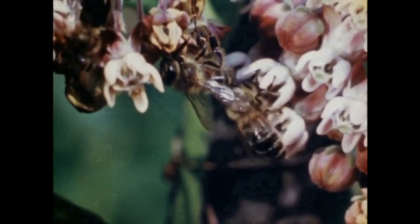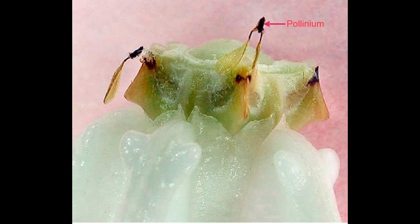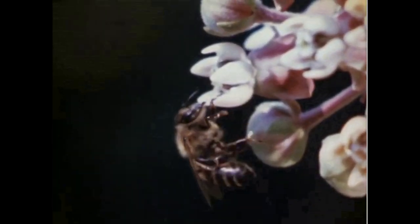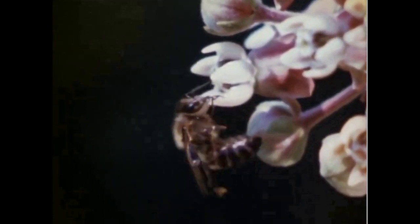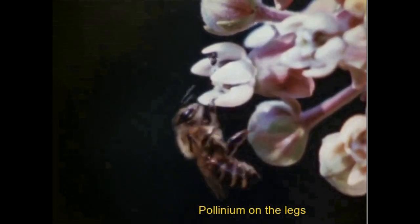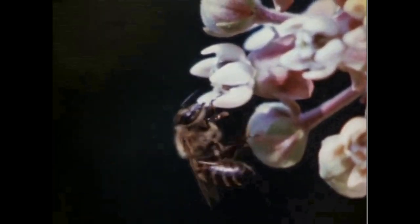When an insect visits the gynostegium part of the flower, the pollinium pair called the translator is detached from the flower and gets attached to the legs or sucking mouthparts of the insect. When the bee flies away, you can see the pollinium attached to the legs of the insect. When this insect visits another flower, the pollinium falls on the stigma, thus ensuring pollination.